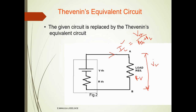Since Rth and Rl are in series, Il equals Vth divided by (Rth plus Rl). Vl equals Il times Rl, and the power consumed by Rl is Il times Vl.